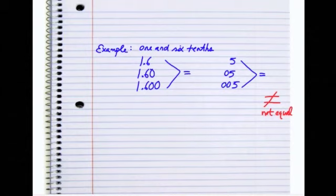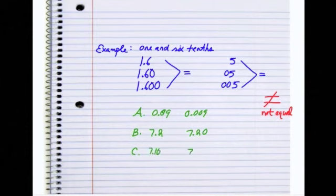So let's look at a couple examples. If I say 0.09 and we'll compare that to 0.009. Our next example will be 7.2 compared to 7.20. And then we'll also look at 7.10 compared to 7.1.